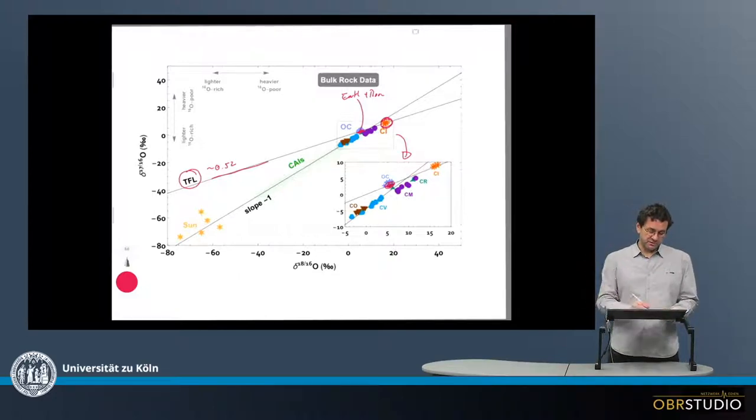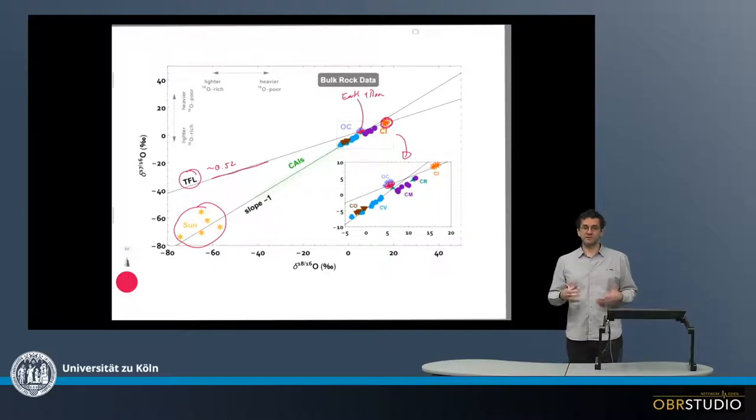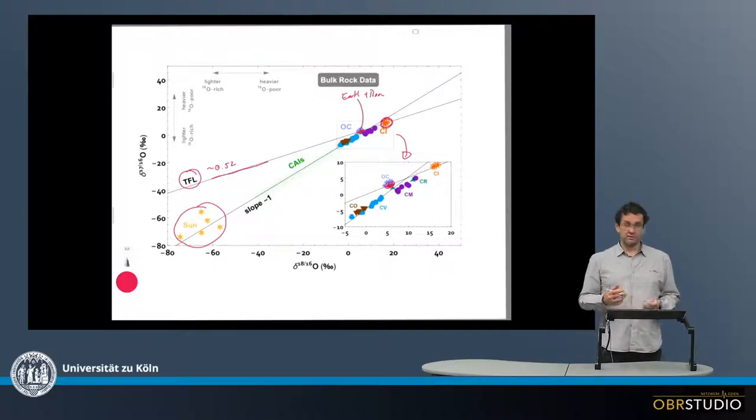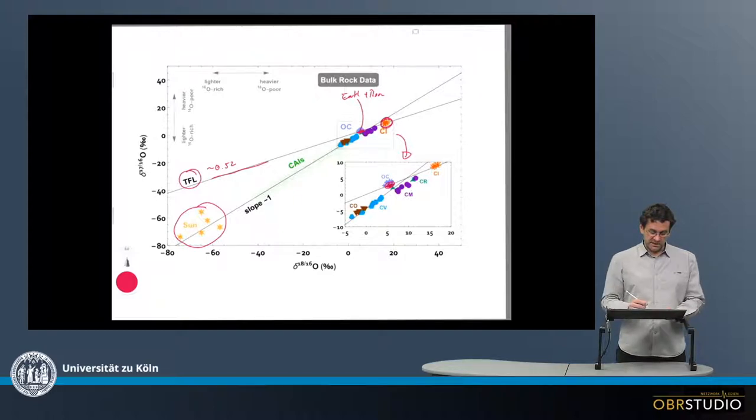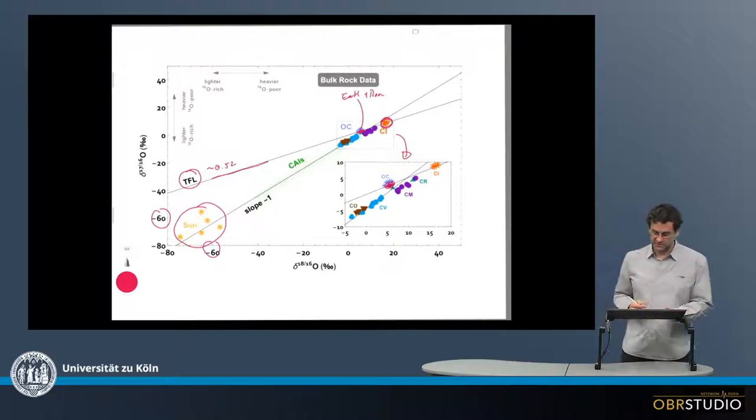But then, a couple of years ago, the solar wind was measured, and thereby the Sun, and it turned out that the Sun has a completely different composition than CI chondrites, and by that also different composition than Earth. The Sun is at roughly around minus 60, minus 60, in the three oxygen isotope space here.